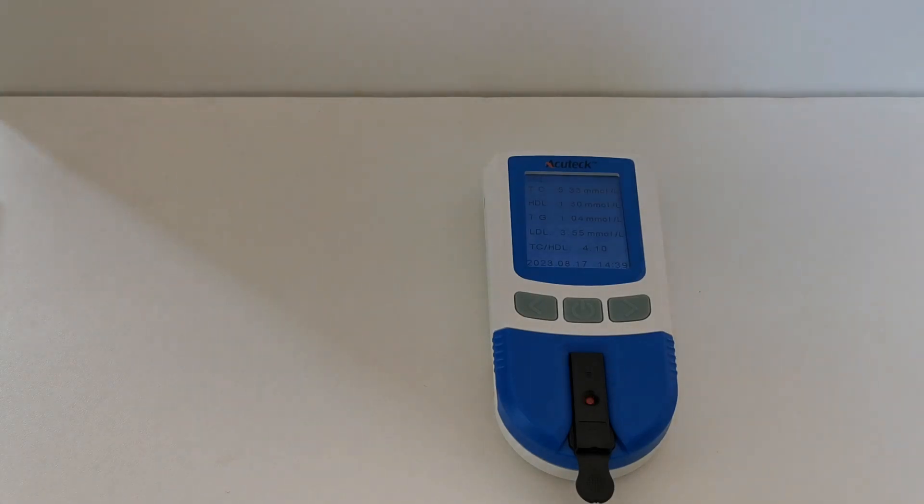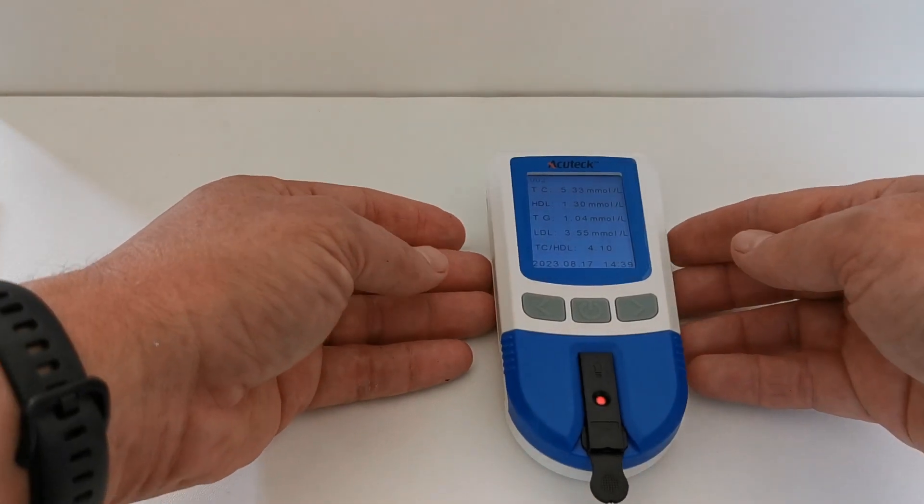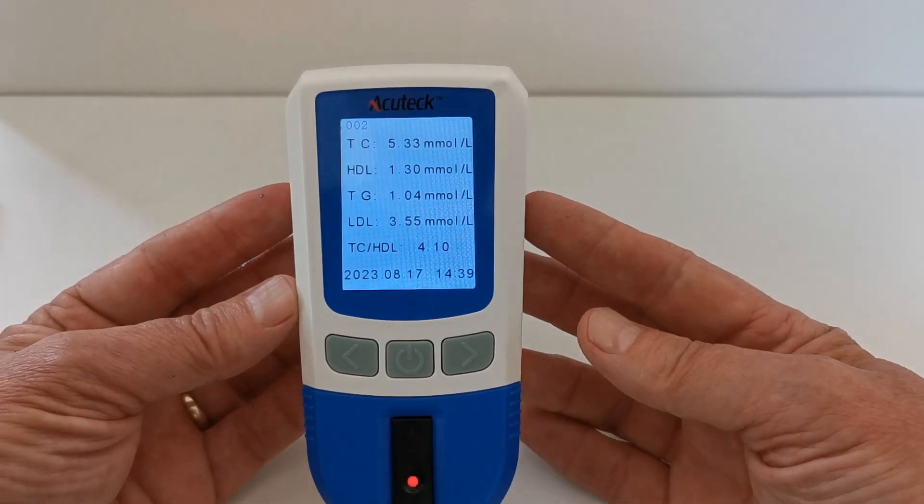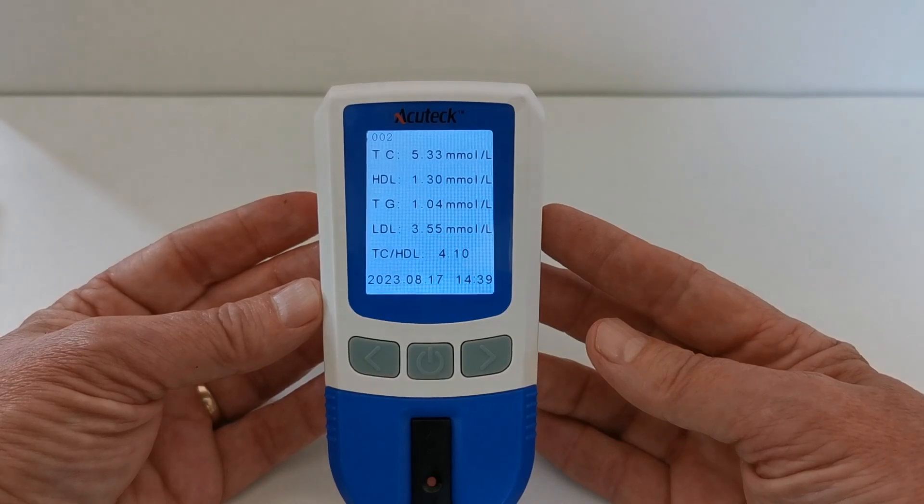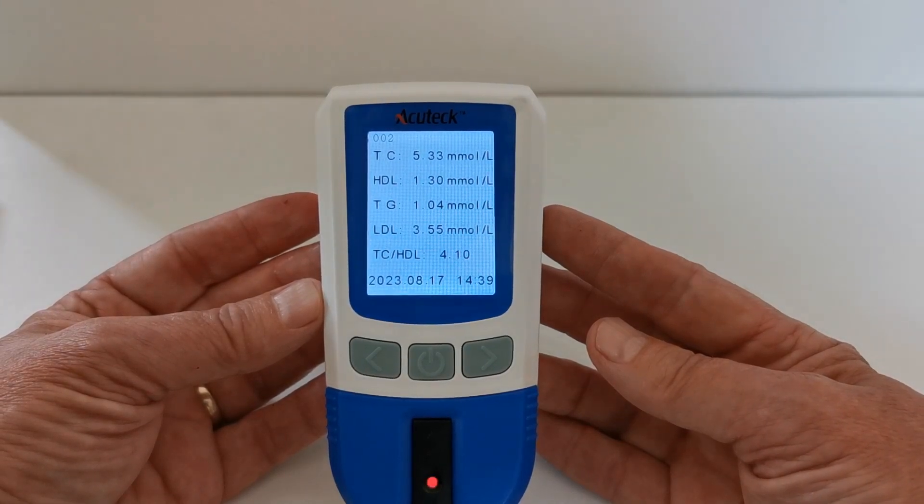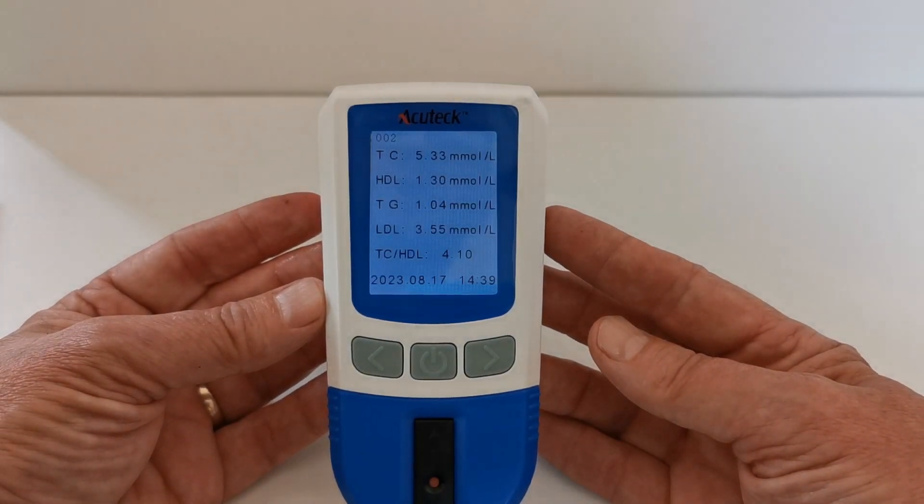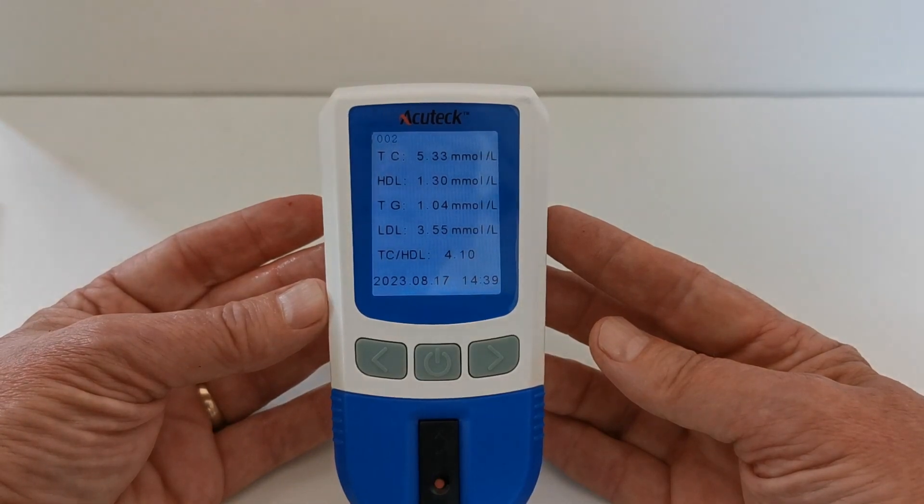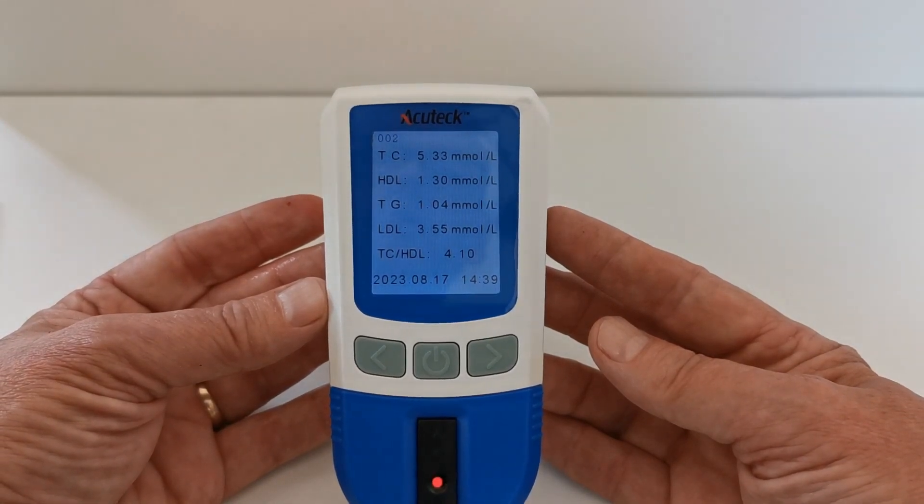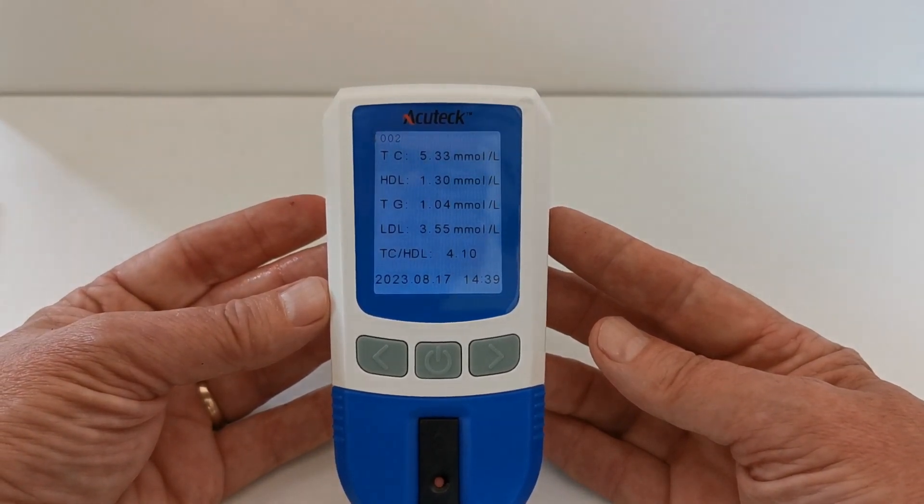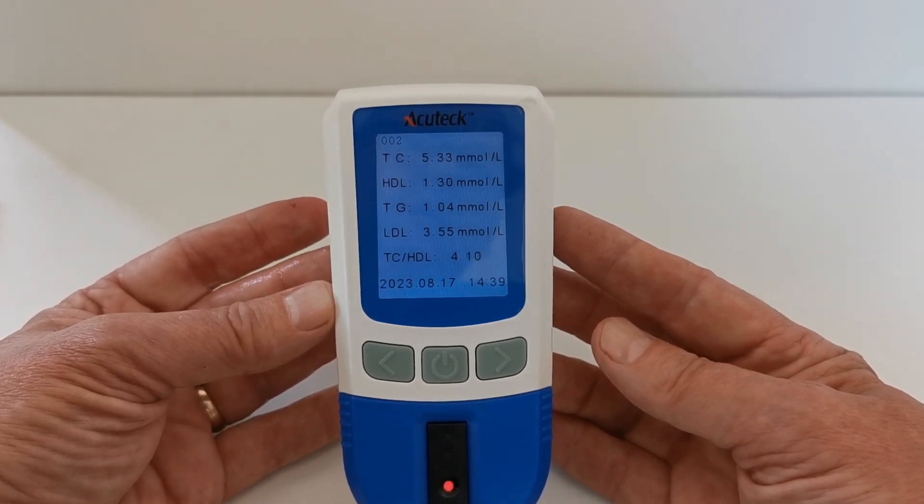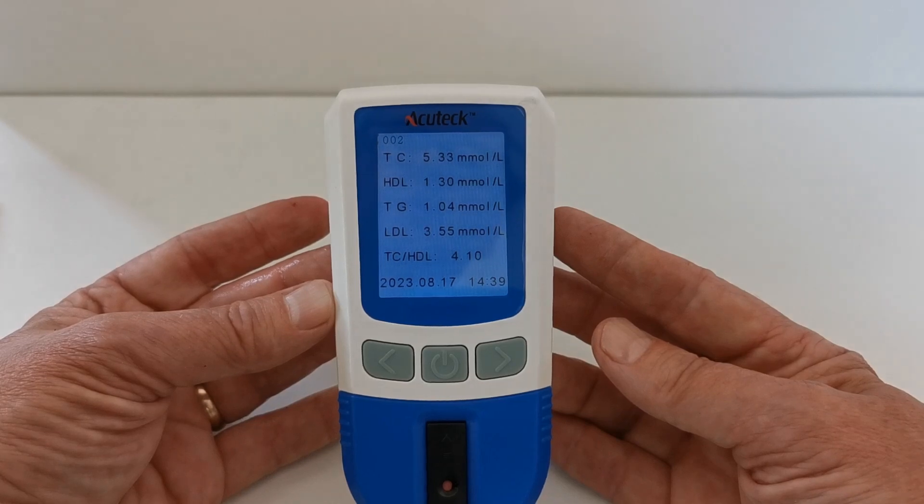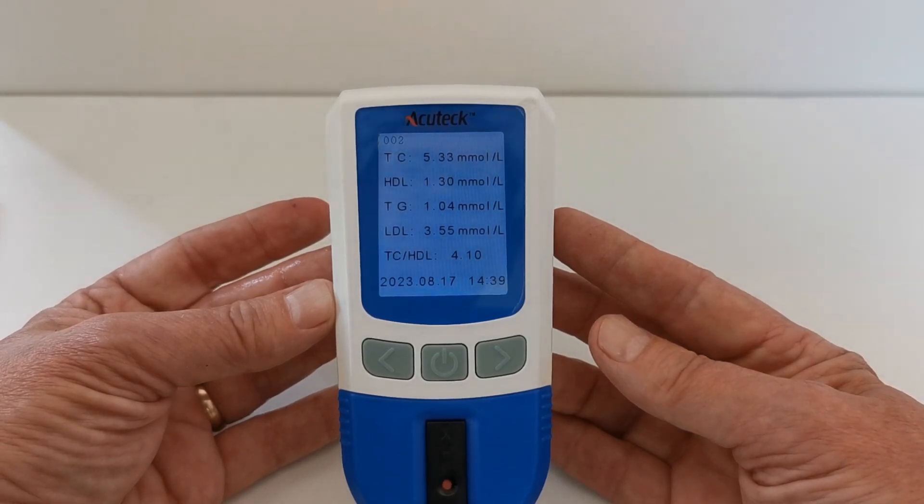Okay, I have the cholesterol results showing now on this display. The total cholesterol is 5.3 millimoles per litre, HDL 1.3, total triglycerides 1.04, and my LDL is 3.55. So the total cholesterol to HDL ratio is 4 to 10, and the time and date as demonstrated on there is all recorded in the memory on this meter. So that's your first test result.